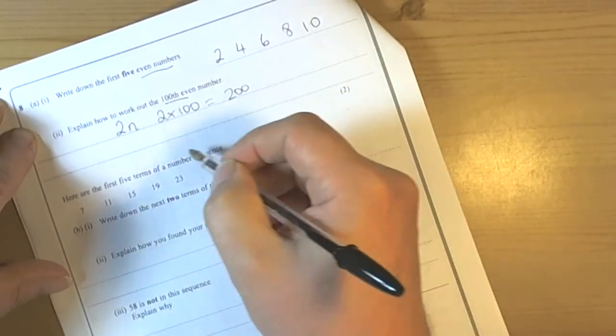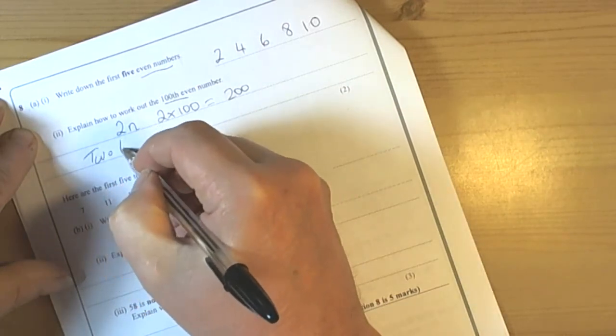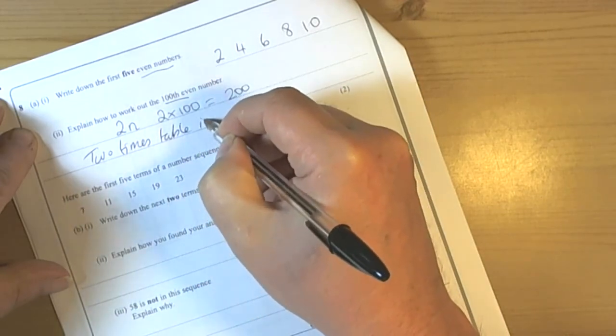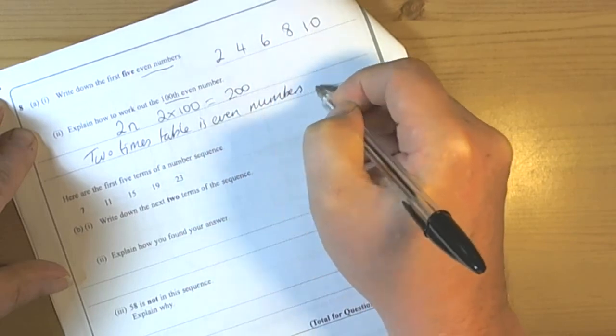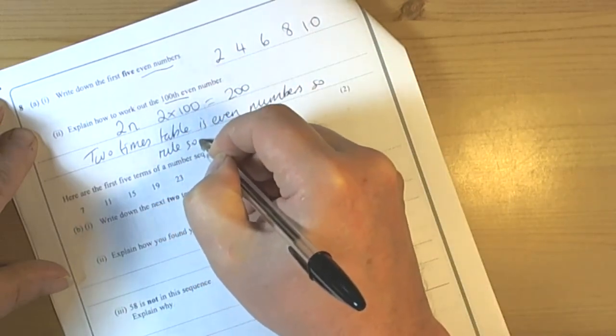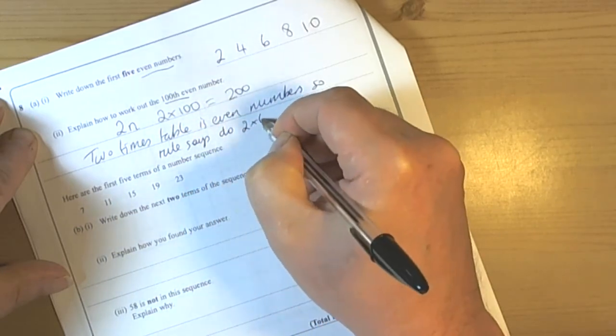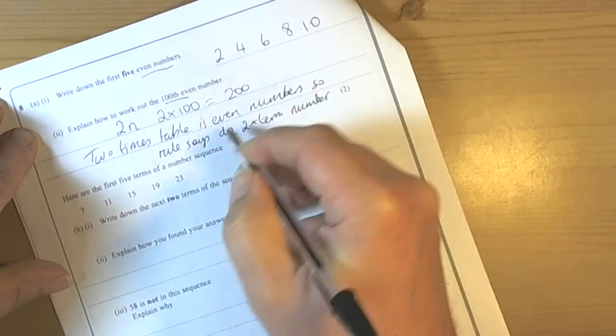And in terms of explaining it then we literally talk about the idea that two times table is even numbers. So rule says do 2 times the term number. Hence the reason we did 2 times 100.